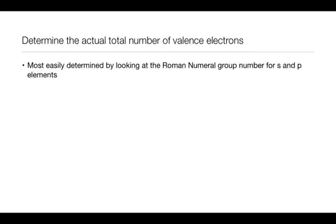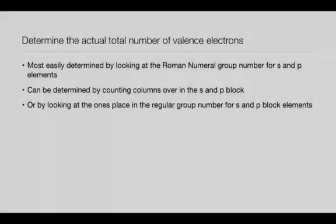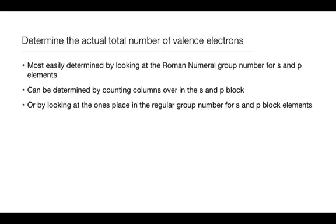Those Roman numerals tell you the number of valence electrons, so group one has one valence electron. Group Roman numeral five has five valence electrons. You can also do this by counting over the number of columns in the S and P elements only, or by looking at the regular number, and if the number is over 10, simply looking at the ones place. So group 17 would have seven valence electrons because the seven is in the ones place.